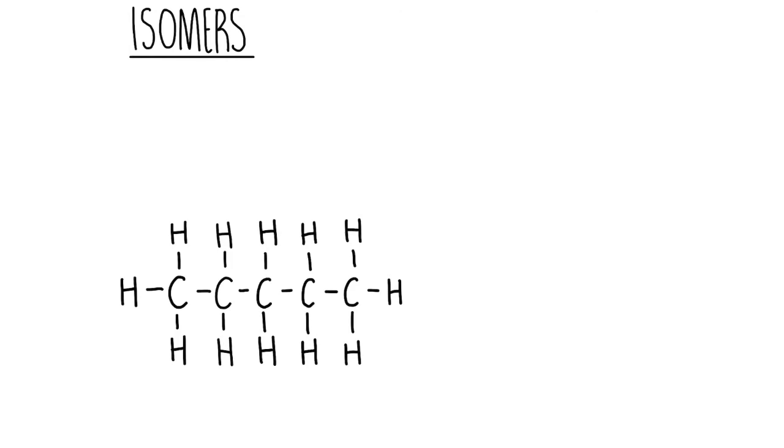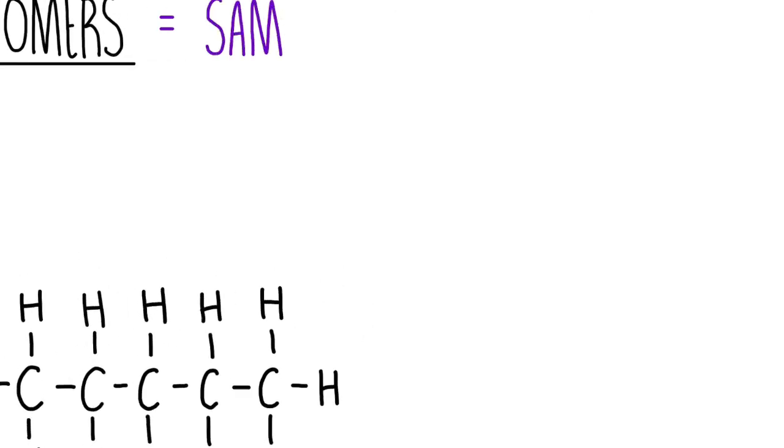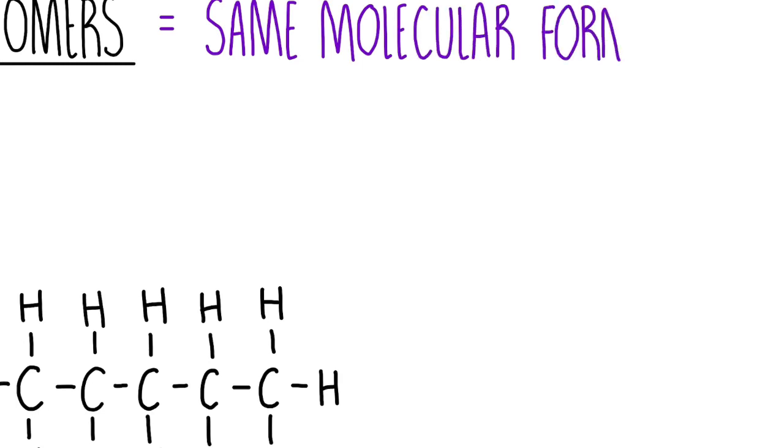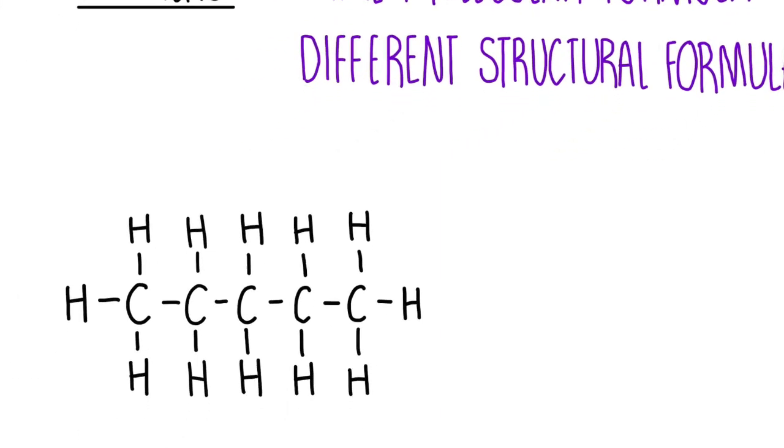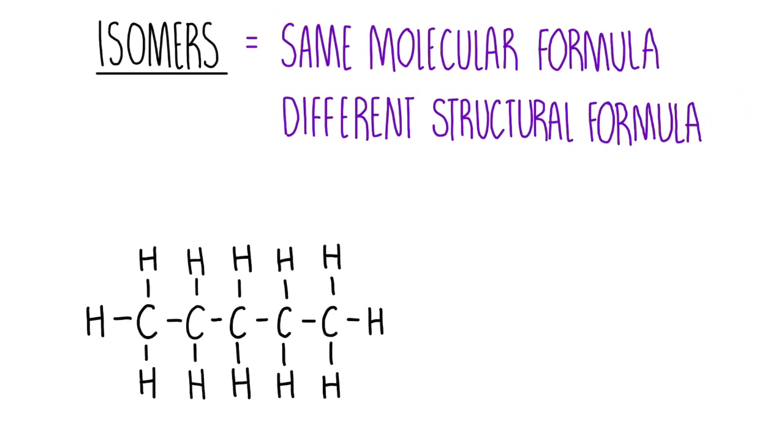Isomers are molecules that have the same molecular formula, but a different structural formula. That basically means that you've got the same number of each type of atom, but they're arranged in different ways.